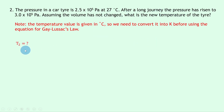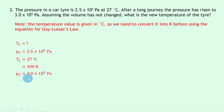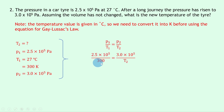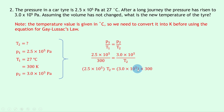Writing down what we know: we're trying to find T2, the final temperature. The initial pressure P1 is 2.5 times 10 to the 5 pascals. The initial temperature T1 is 27 degrees Celsius, which we convert by adding 273 to give us 300 Kelvin. And P2, the final pressure, is 3.0 times 10 to the 5 pascals. Writing down our equation for Gay-Lussac's law: P1 over T1 equals P2 over T2. Substituting in gives us 2.5 times 10 to the 5 over 300 equals 3.0 times 10 to the 5 over T2. Cross multiplying gives 2.5 times 10 to the 5 times T2 equals 3.0 times 10 to the 5 times 300. Dividing by 2.5 times 10 to the 5 gives us T2 equals 360 Kelvin.